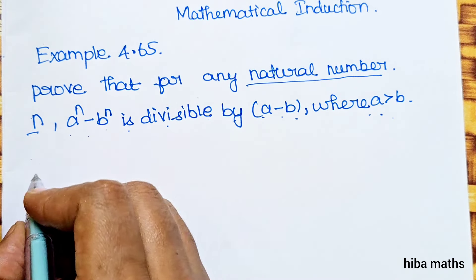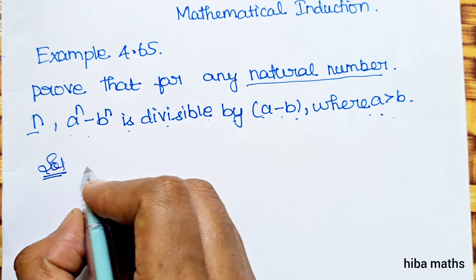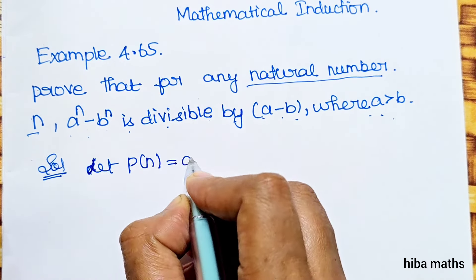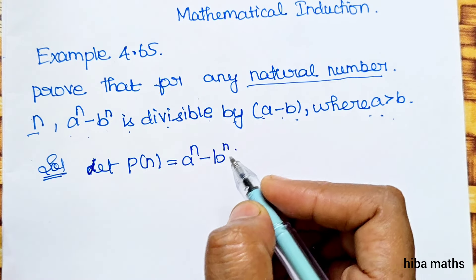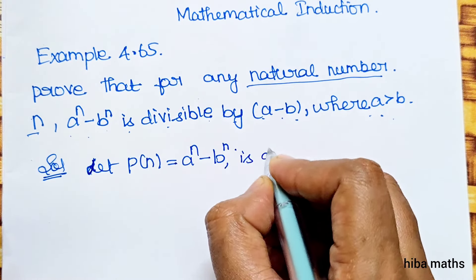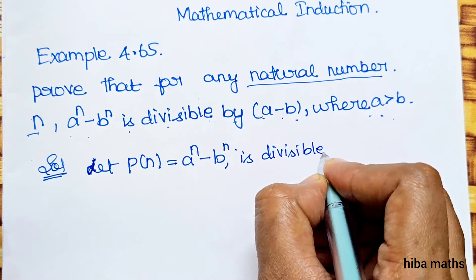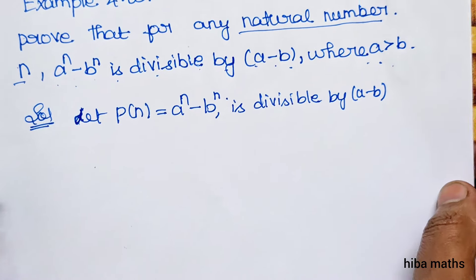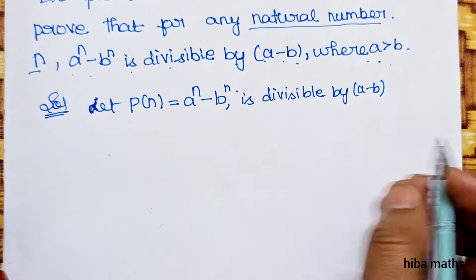Let P(n) be the statement: a^n minus b^n is divisible by (a minus b). We will solve this problem step by step.